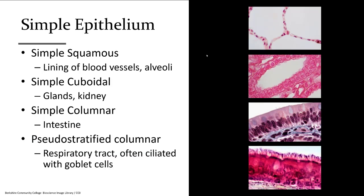For simple epithelial tissue, you should be comfortable identifying them in lab activities. You'll need to identify simple squamous — flat and thin cells — or cuboidal cells, which can be seen in a circular arrangement like in a kidney tubule. Then there's simple columnar, and pseudostratified columnar ciliated epithelium.